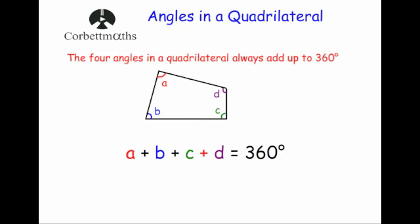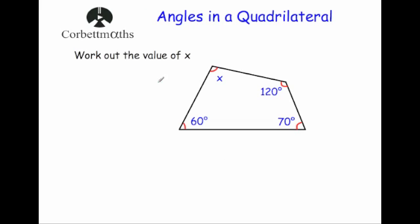Let's have a look at a typical question now. A typical question is where you've been given three angles and you've got to work out the fourth one. We know that all four of these angles will add together to give you 360 degrees, so to work out the missing one you would add together the three you've been given and take that answer away from 360 degrees.